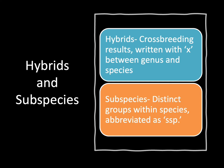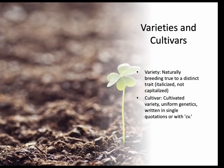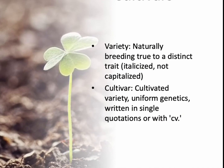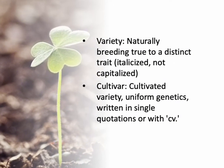Hybrids are crossbreeding results written with an X between genus and species — for example, Quercus X and then the species name. Subspecies are distinct groups within a species, abbreviated SSP. Then we have varieties and cultivars. A variety naturally breeds to a distinct trait — it's italicized but not capitalized. A cultivar is a cultivated variety with uniform genetics, written in single quotations or with CV. So naturally occurring versus cultivated — we created that.